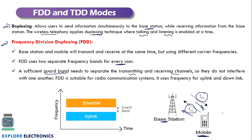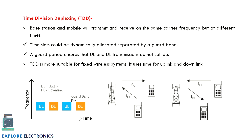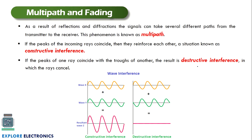In Time Division Duplexing (TDD), the base station and mobile transmit and receive data on the same carrier frequency but in different time slots, which can be dynamically allocated and separated by a guard band. The guard period ensures uplink and downlink transmissions do not collide. Once the uplink transmission is done, the downlink happens, separated by time slots with a guard band. TDD is more suitable for fixed wireless systems.